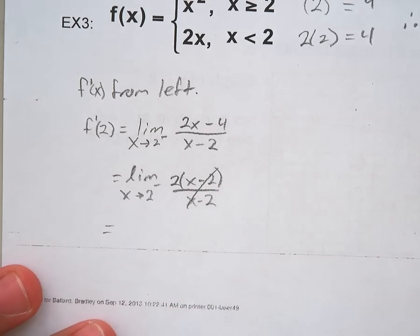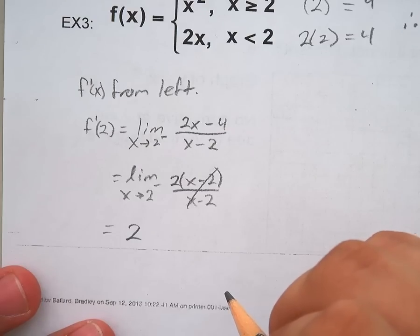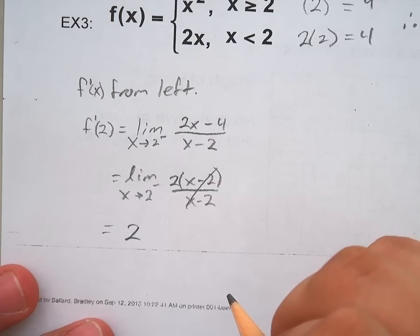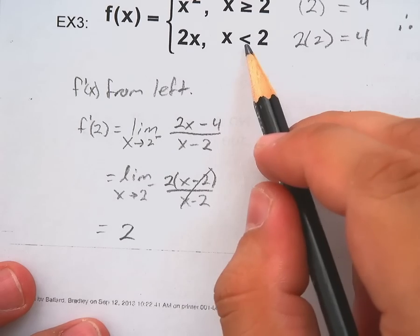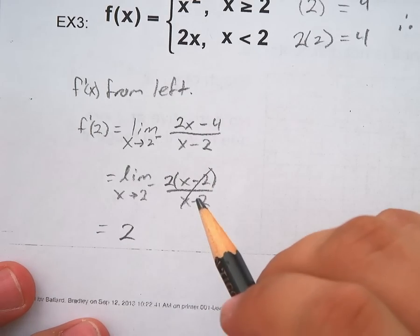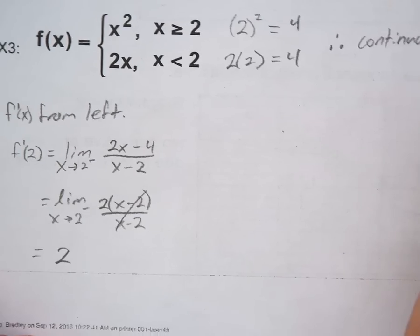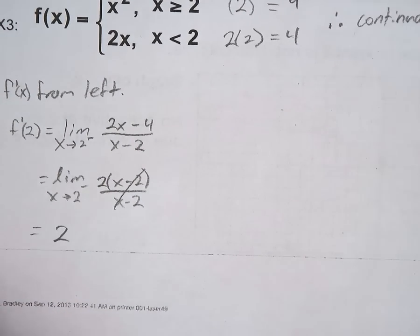So that's going to be 2. Alright, that's from the left. Remember it's to the left because x is less than 2, and let's find the derivative from the right.